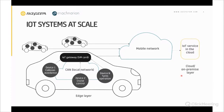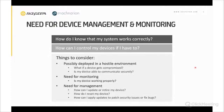This is an example of one car, but there can be many cars on the road, each with multiple devices, so the number of devices in your IoT system can scale up very quickly. This calls for implementation of a device management and monitoring system, which reduces to two general questions: how do I know my system works correctly, and how can I control my device?